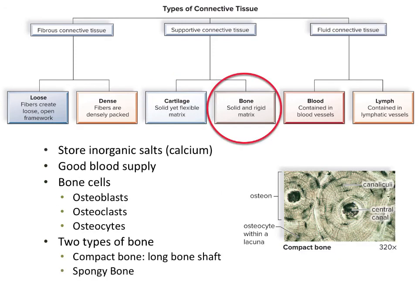Bone is also connective tissue and its job is to store salts, mostly calcium, for when the body needs them. Bones have an excellent blood supply, which is why you can completely break a bone, put it in a cast, and be walking on it again six weeks later. There are different types of cells that live within bones: osteoblasts build bone and osteoclasts break down bone. We also have two types of bone — compact bone and spongy bone — which we'll cover more when we discuss the skeletal system.